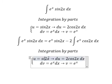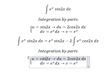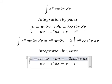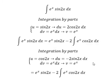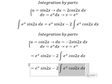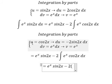For this second application, we choose u equal to cos(2s). The first derivative of this gives us negative 2 sin(2s). So we again set up the formula: u times v minus the integral of v du.